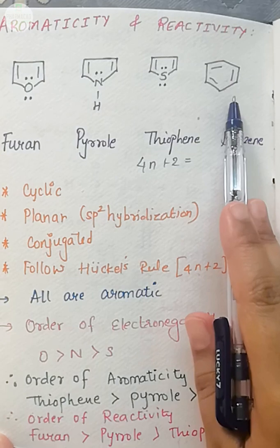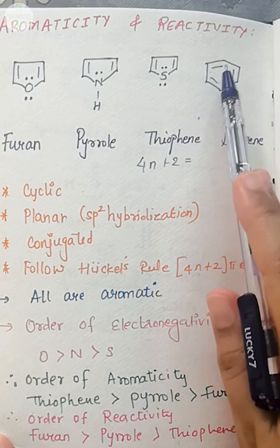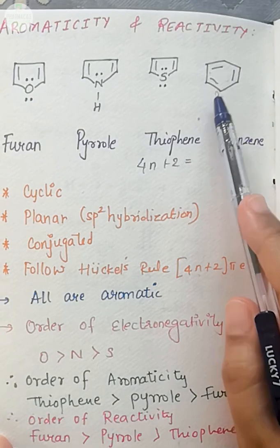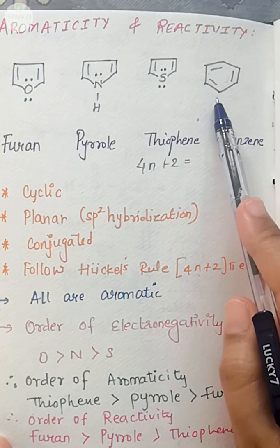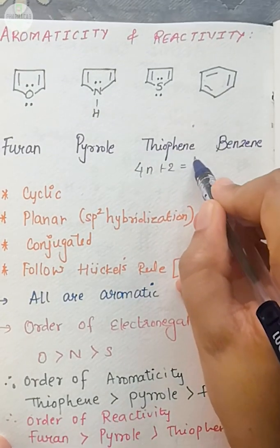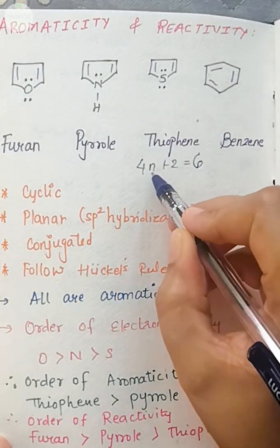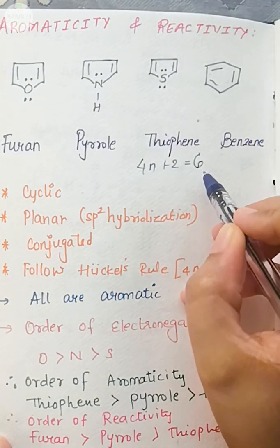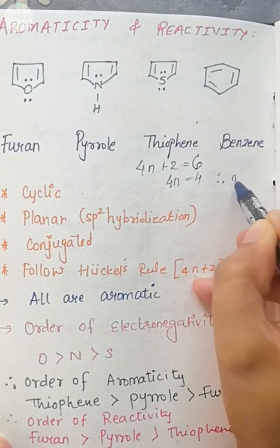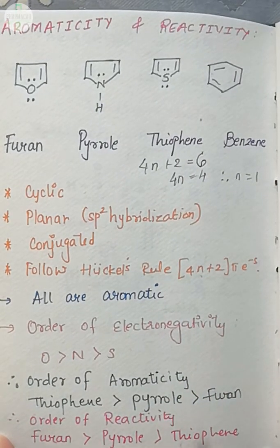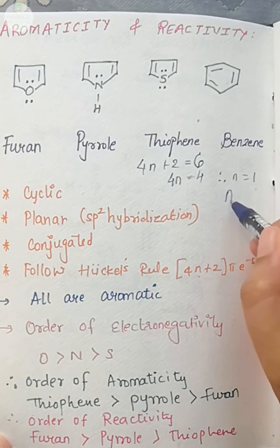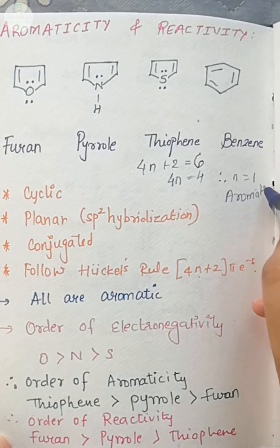So I will have 4n plus 2 equals, I have to equate this with pi electrons. Now benzene, how many pi electrons? Benzene has 3 pi bonds. What is the meaning of one bond? One bond means 2 electrons. So here are 3 bonds, that means how many electrons will be? It will be 6 electrons. So 4n plus 2 will be equivalent to 6. If I calculate this, I will get 4n equals 4. Therefore n will be equal to 1. Now since n value is a whole number, I can say that this molecule is aromatic.